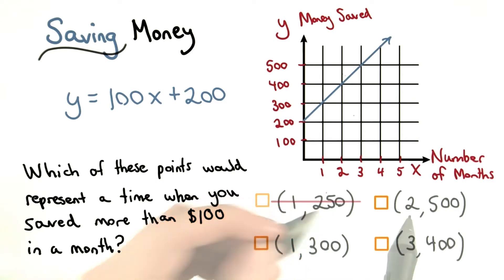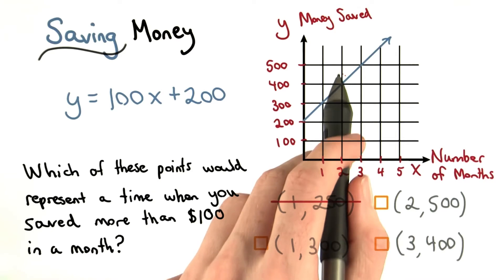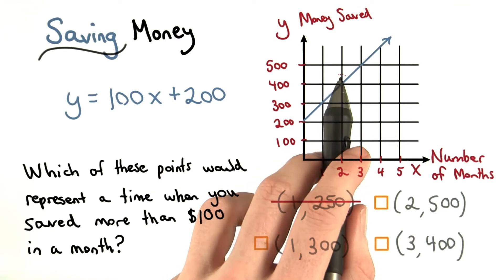We should have gained more than 100. For two months and $500, we can see that that is above our line. This means we must have saved more than $100 in one of these months.